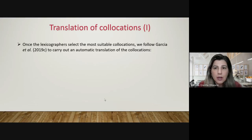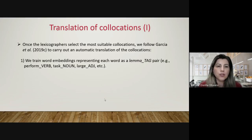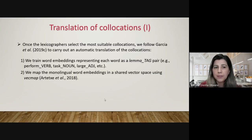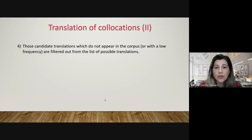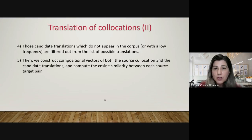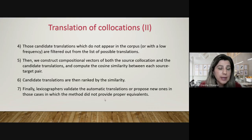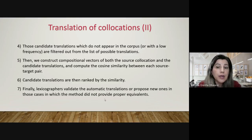Regarding translation of collocations, once the lexicographers select the most suitable collocations, we follow Garcia et al. to carry out an automatic translation. We train word embeddings representing each word as a lemma–tag pair, and map the monolingual word embeddings into a shared vector space using VECMAP. For each collocation in the source language, we search for distributionally similar equivalents of the base and the collocate in the target language. Candidate translations which do not appear in the corpus with sufficient frequency are filtered out. We then construct compositional vectors of both the source collocation and the candidate translations and compute the cosine similarity between each source–target pair. Candidate collocations are ranked by similarity, and finally, lexicographers validate the automatic translations or propose new ones where the method did not provide proper equivalents.